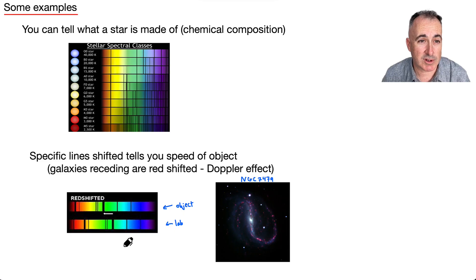So for example, you can tell what a star is made of, like I showed. Here's actually some of the different patterns. So you can see, for example, different stars have these different characteristic patterns because they have different atoms in them. So you can tell what stars are made of.